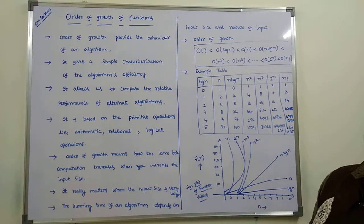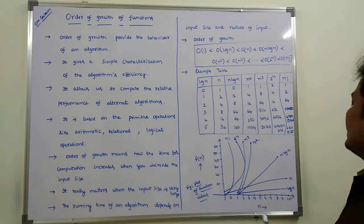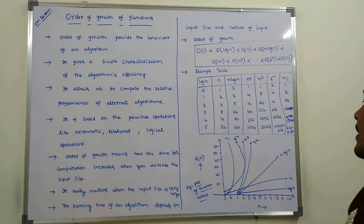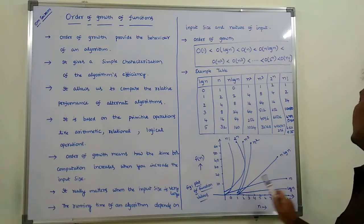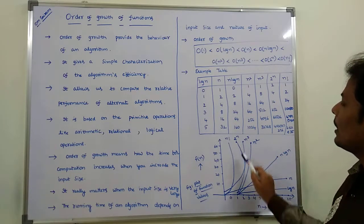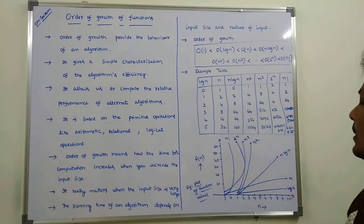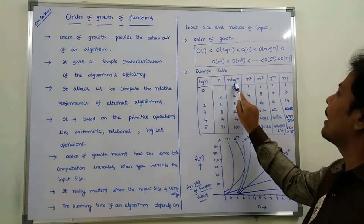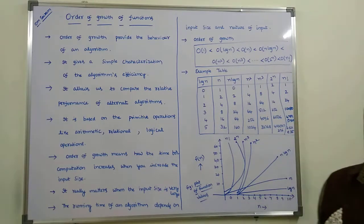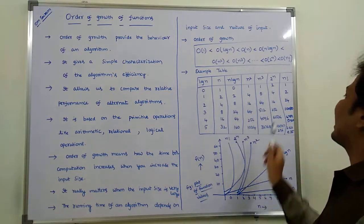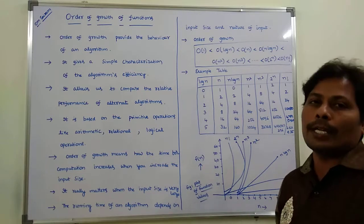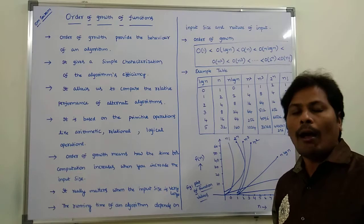The examples we discussed can be shown in a diagram. In the x-axis is n, the input size; in the y-axis is the growth of the function according to input size. The functions plotted are log n, n, n log n, n², n³, 2ⁿ, and n!. This is the plot of function values, showing the order of growth of functions according to input size.